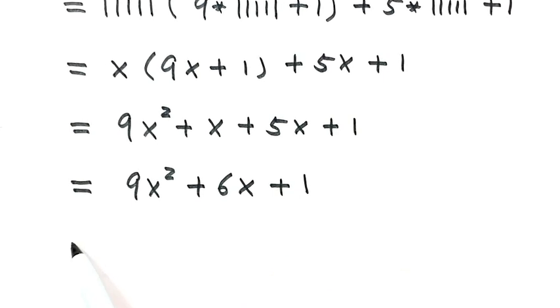The three terms make a perfect square, which is 3x plus 1, squared.